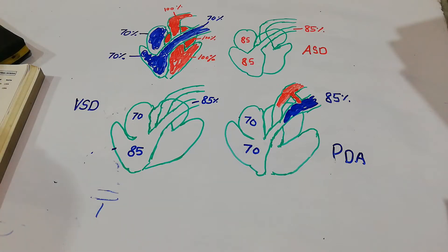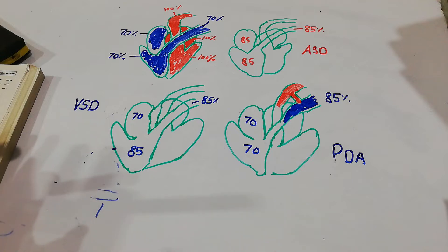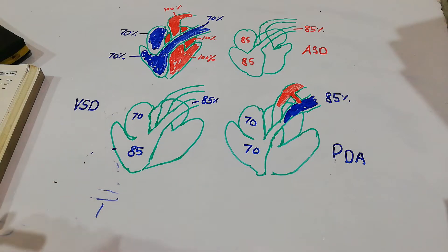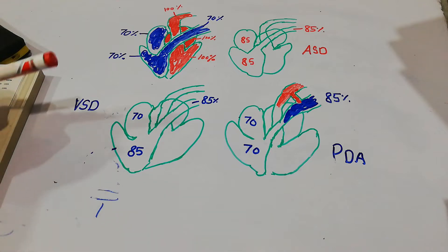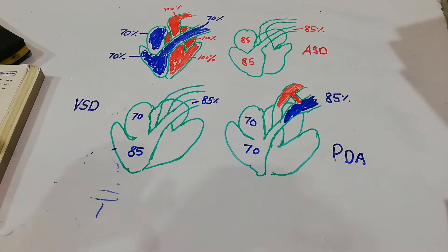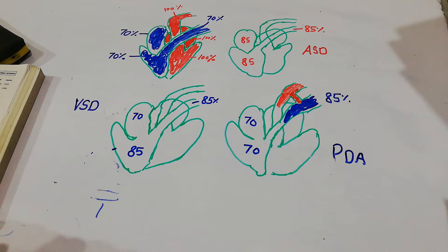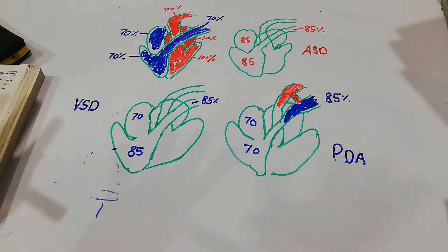Today we are going to talk about oxygen saturation levels in different chambers of the heart in a normal heart and in a heart with congenital anomalies, and we are going to see the step-up changes in oxygen saturation that occur with congenital anomalies.